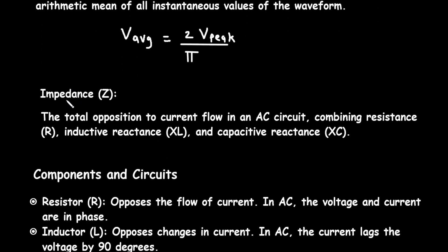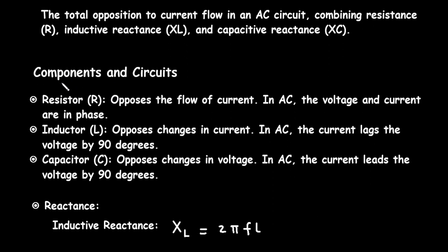Next is impedance, represented by capital Z. It is the total opposition to current flow in an AC circuit, combining resistance R, inductive reactance XL, and capacitive reactance XC. This combination is the opposition to the flow of AC current and is called impedance.